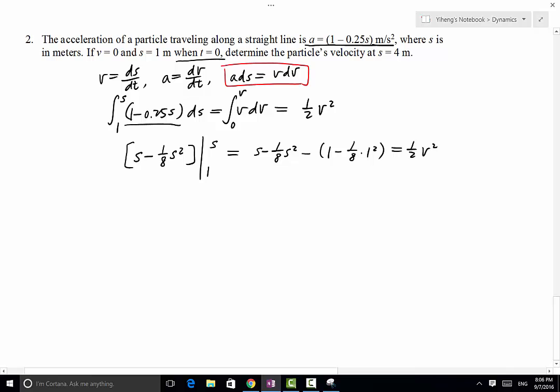From here, if you want to, you can also find a general v versus s function that you can use to evaluate v, the velocity, at any given s. But in this case, because we are asked to evaluate velocity at s equals 4 meters, which is a specified situation, we can just simply plug in s equals 4 and do the evaluation.